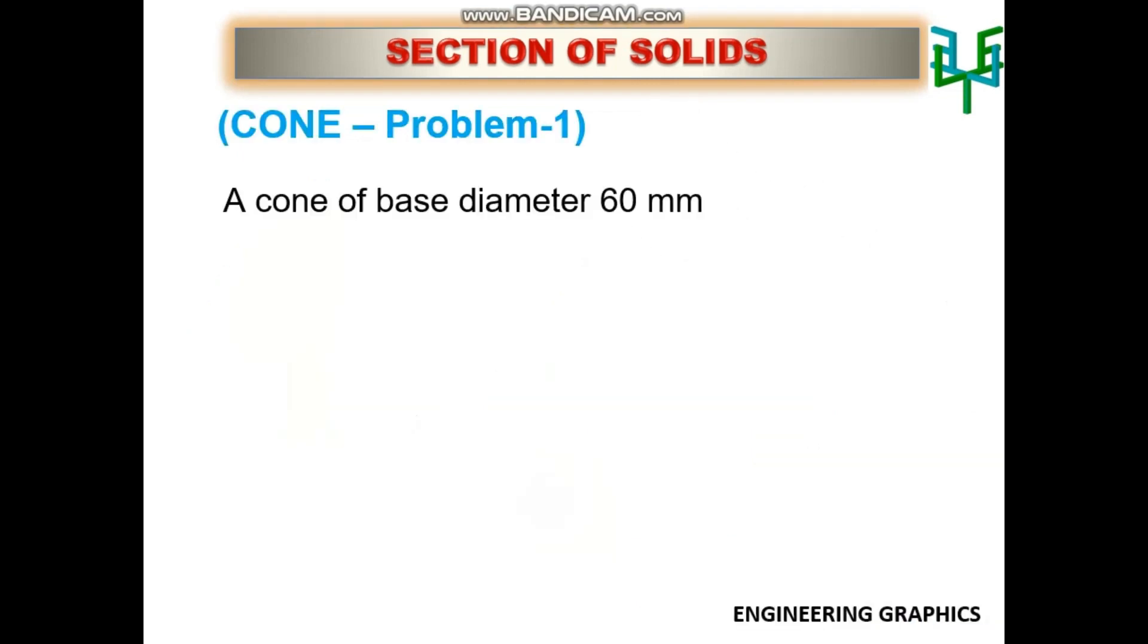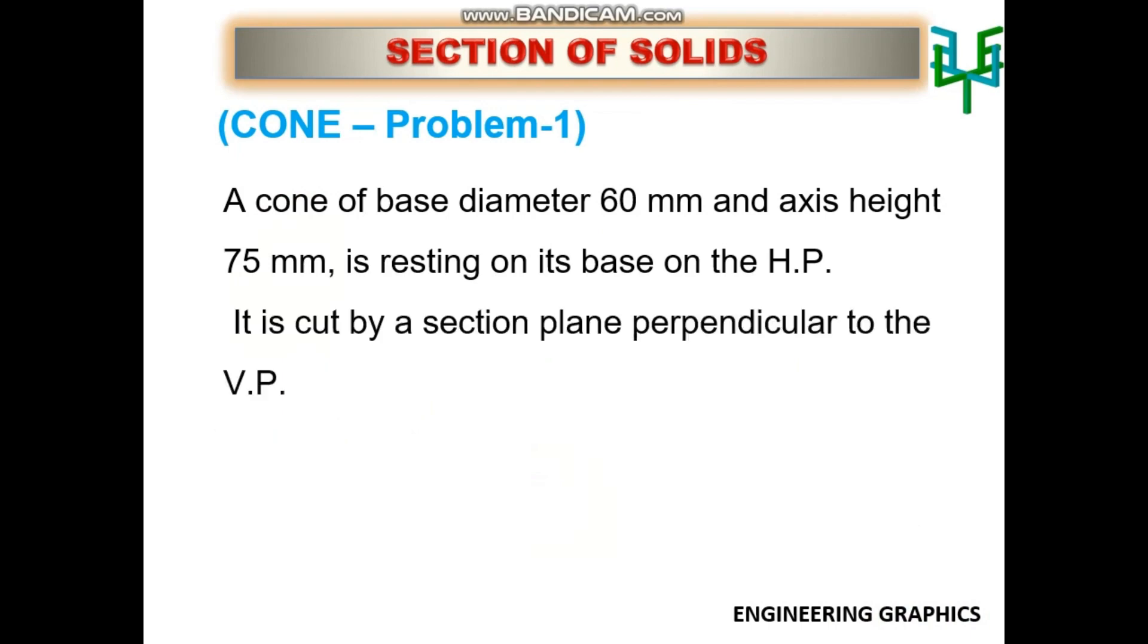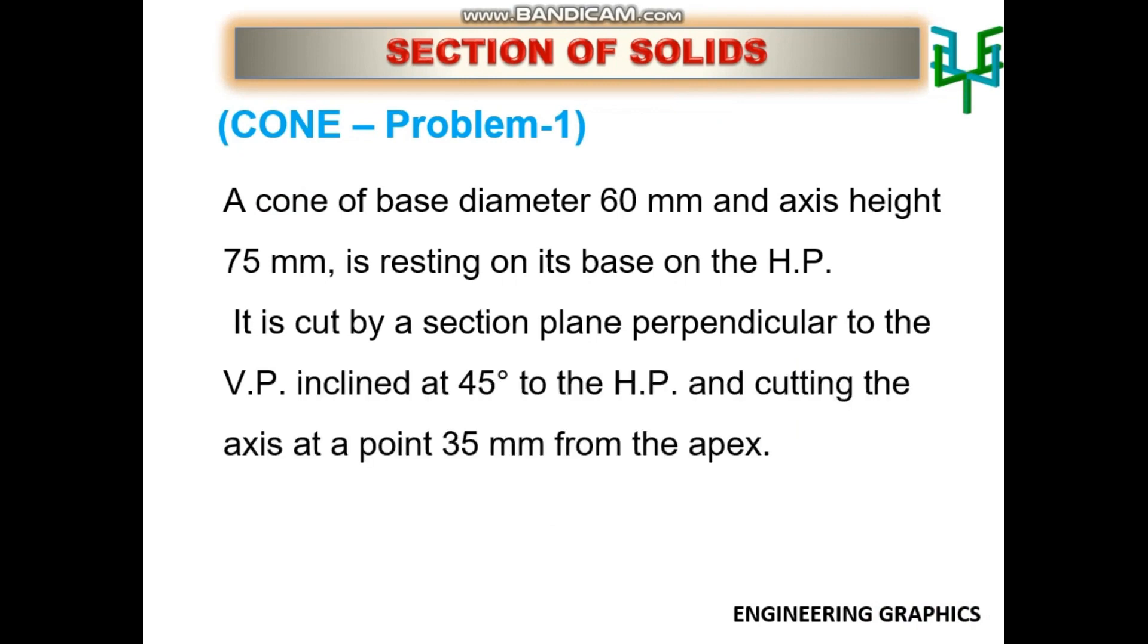A cone of base diameter 60 mm and axis height 75 mm is resting on its base on the ground. It is cut by a sectional plane perpendicular to VP inclined at 45 degrees to HP and cutting the axis at a point 35 mm from the apex. Draw the sectional top view and true shape of the section.